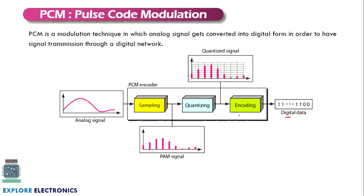The PCM encoder is going to process the data by sampling the data, then it is going to quantize, and then finally encoding. Here we need to understand how this sampling is going to work.